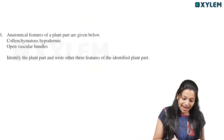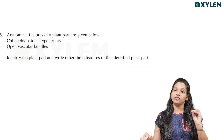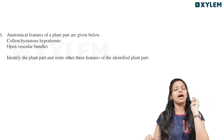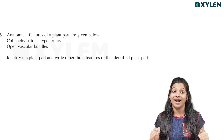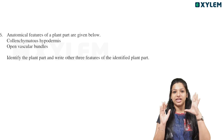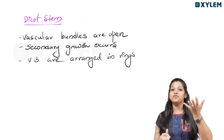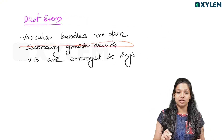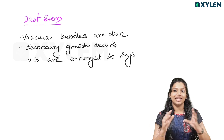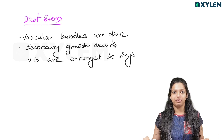Another question: anatomical features of a plant part are given — identify the plant part and write three features. The features shown are collenchymatous hypodermis and open vascular bundles. The hypodermis differentiates the stem. This is a dicot stem. Its features are ring-like arrangement of vascular bundles, open vascular bundles capable of secondary growth, and they are arranged in ring form.